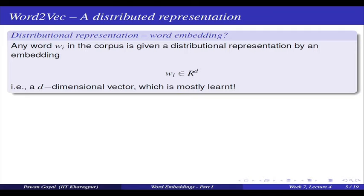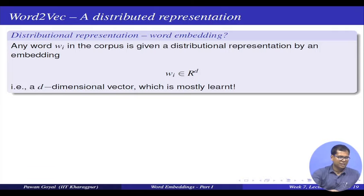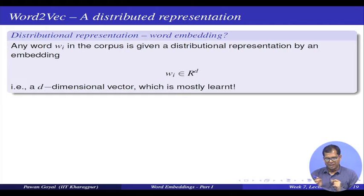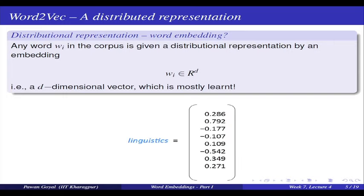In the distributed representation — also called word embeddings — any word w_i in my corpus is given a distributed representation. I have a fixed d-dimensional vector and I represent each word in these d dimensions. I give them various weights, and these weights are to be learned by some method. The idea is that each word in my vocabulary will be represented in some fixed dimension d.